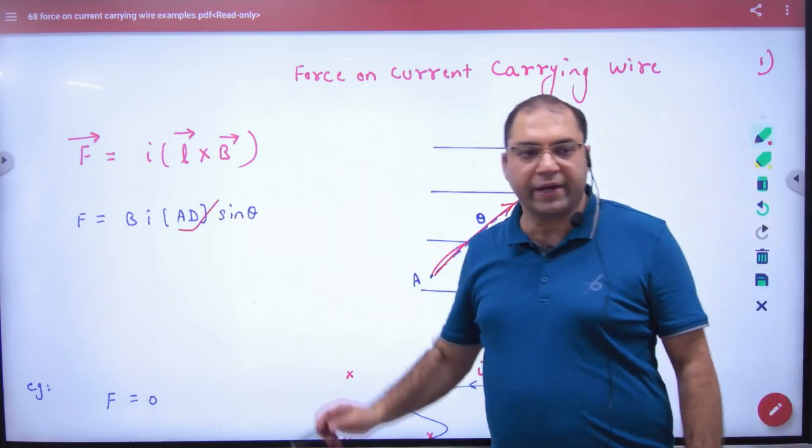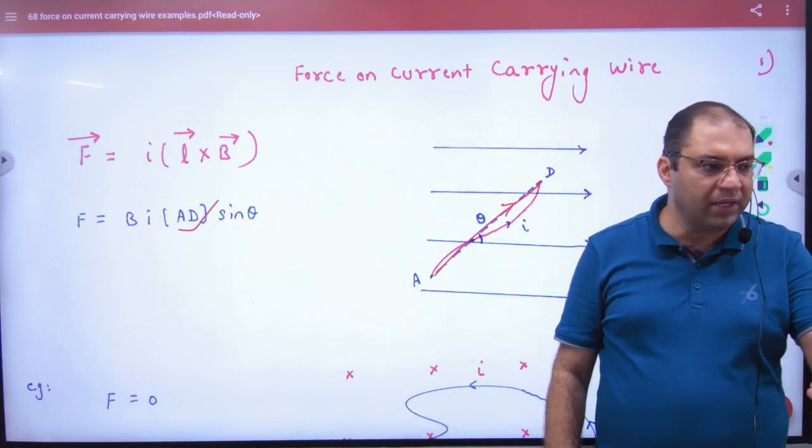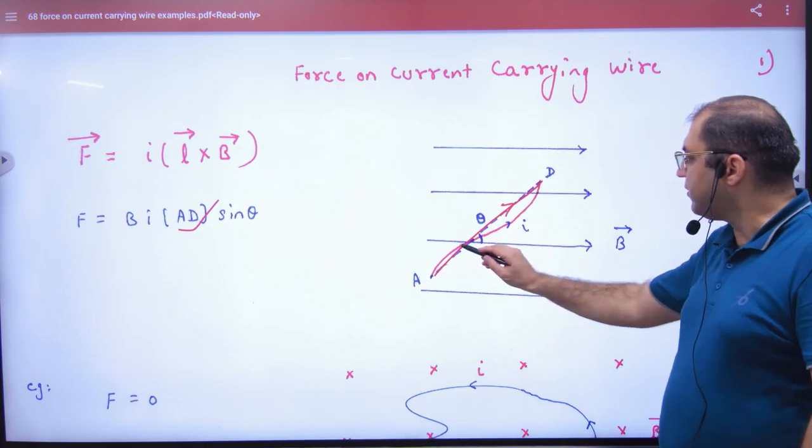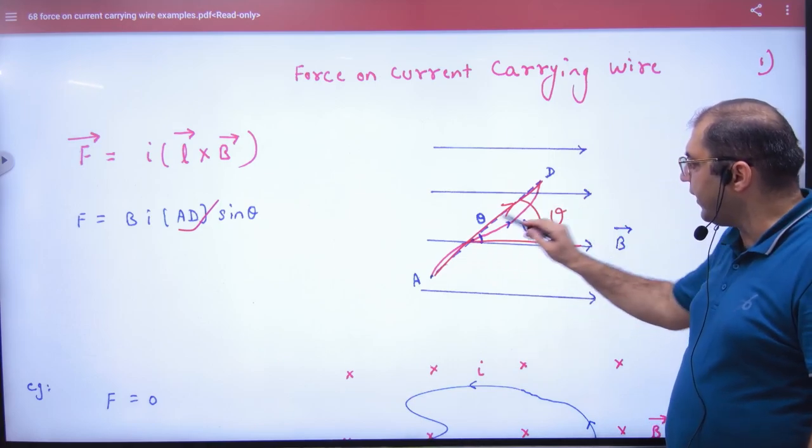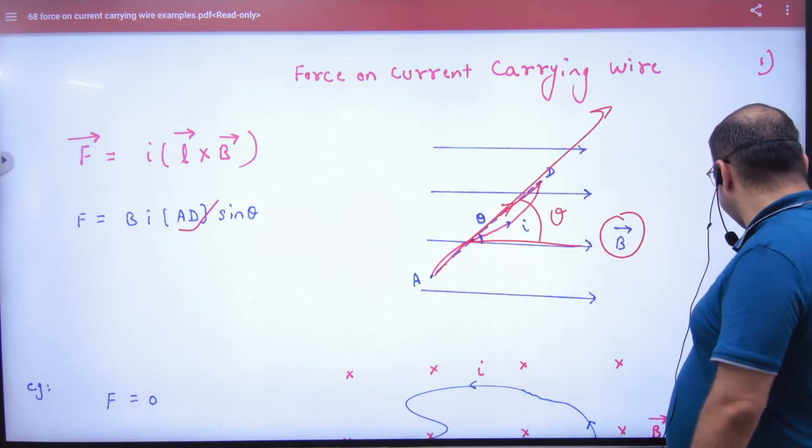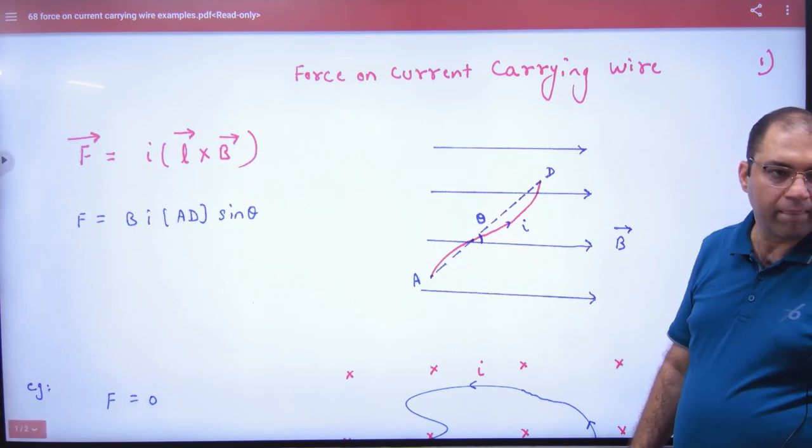What will we put in length? AD. What will be the answer? B times I times length AD times sin theta, because the angle between AD and B is theta.